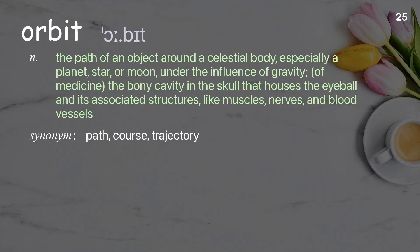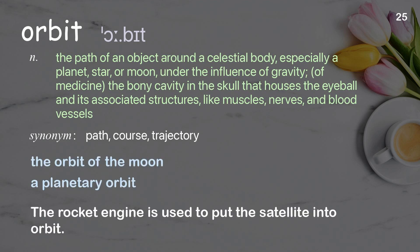Orbit: the path of an object around a celestial body, especially a planet, star, or moon, under the influence of gravity; in medicine, the bony cavity in the skull that houses the eyeball and its associated structures, like muscles, nerves, and blood vessels. Examples: the orbit of the moon; a planetary orbit. The rocket engine is used to put the satellite into orbit.